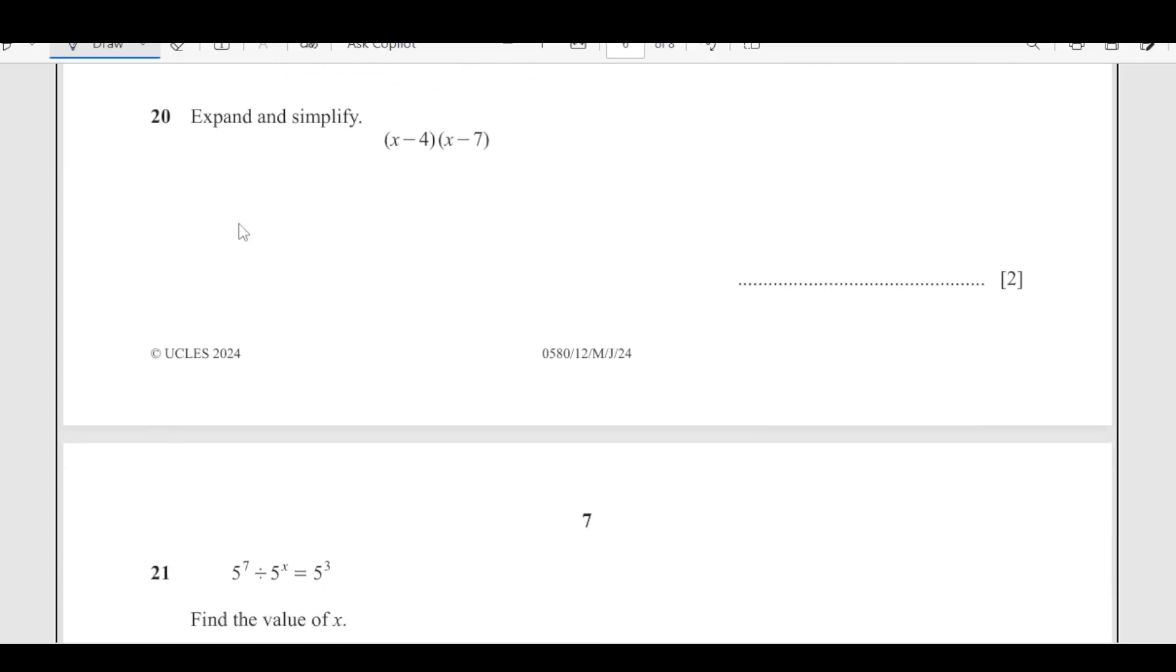Number 20: Expand and simplify (x - 4)(x - 7). Expanding the bracket means x is going to multiply everything, so x squared minus 7x. Then 4 multiplies: negative 4x, and negative times negative is positive 28. Combining like terms: x squared minus 11x plus 28.